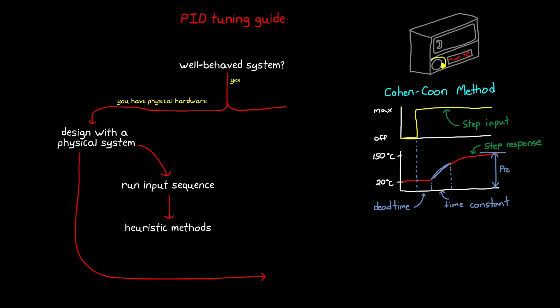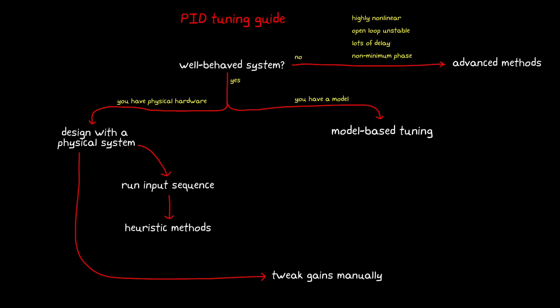And then plug those into an equation to get your initial gains. You have to be careful with the Ziegler-Nichols method on real hardware, because it requires you to get your system oscillating on the verge of instability, and that's dangerous for a lot of systems, and maybe you're not comfortable doing that. Either way, these heuristic methods only provide an initial guess. Hopefully it's a close guess, but your system may still require manually tweaking the gains to get the performance that you're looking for.